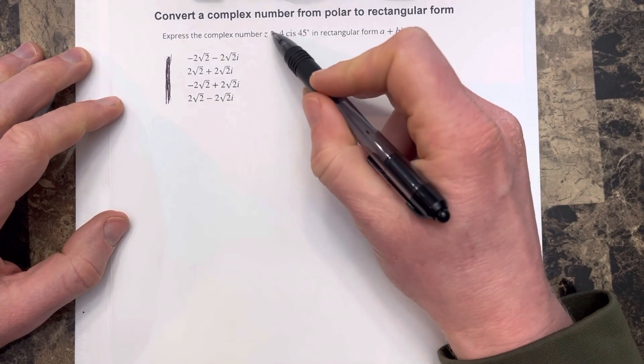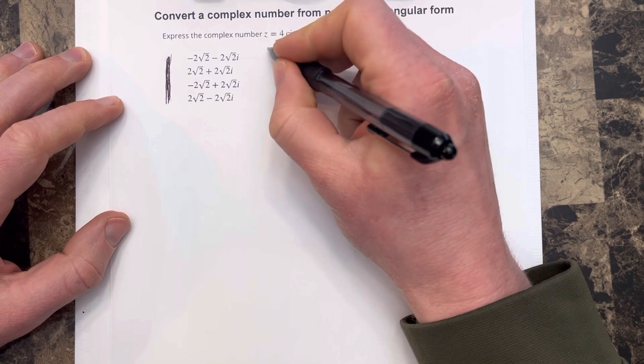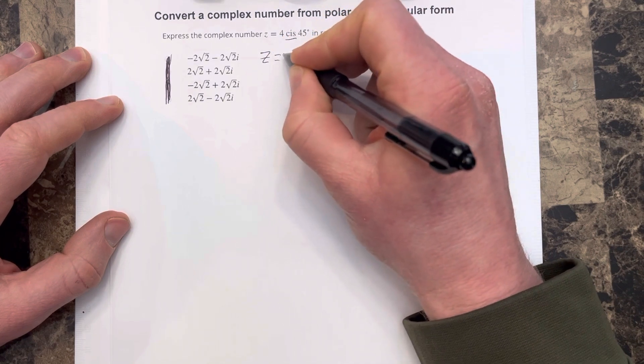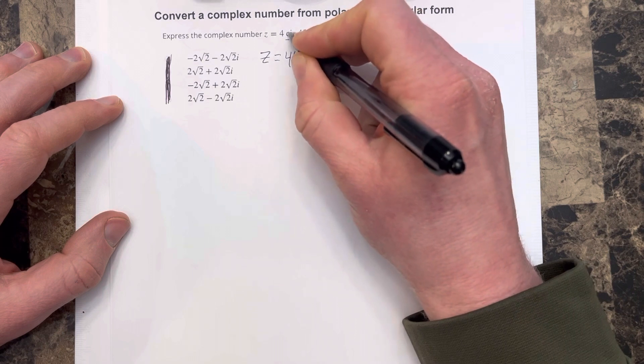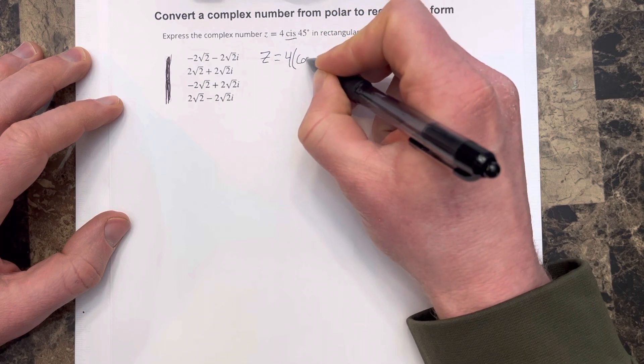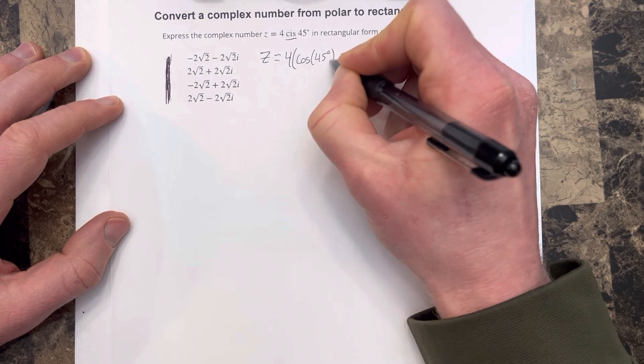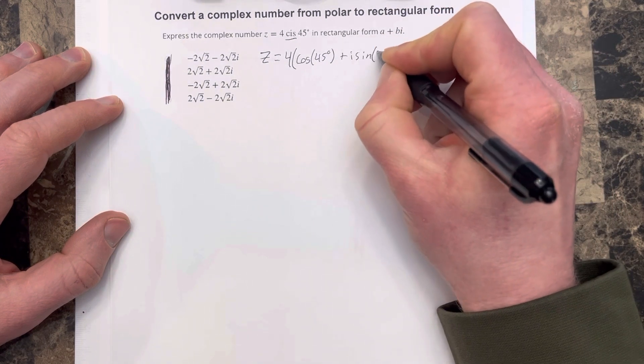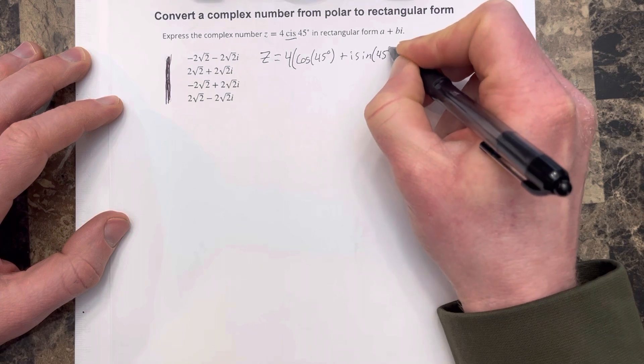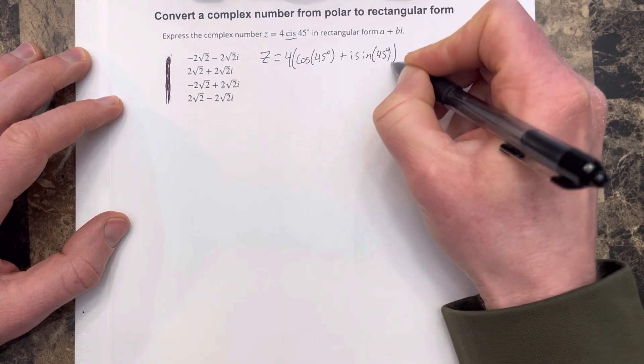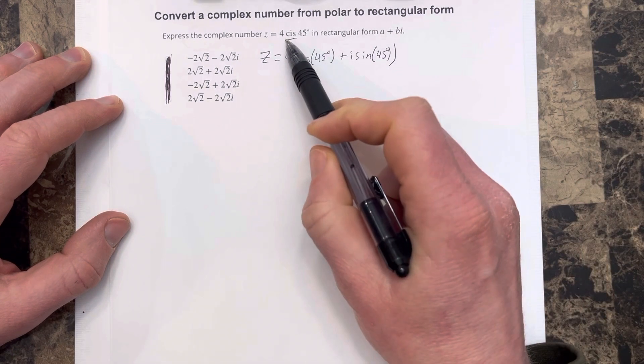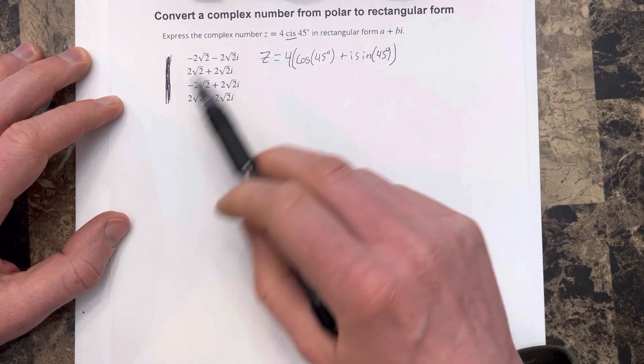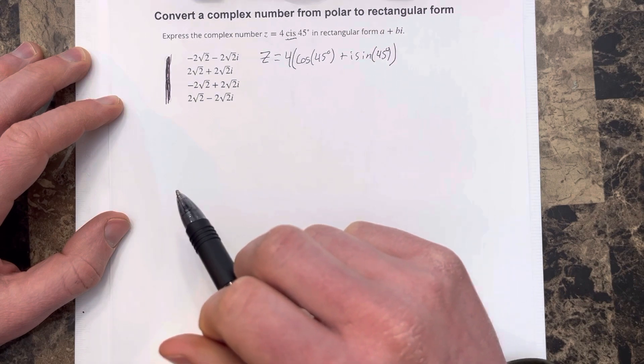First thing we want to do is recognize that this cis part is really Z equal 4, and then this is shorthand for cosine of 45 degrees plus I sine 45 degrees. They like to write this cis piece whenever they're representing complex numbers in polar form.